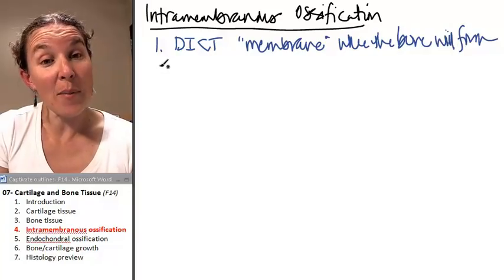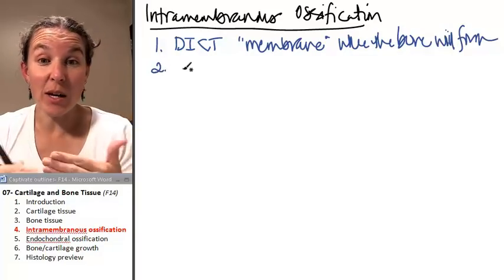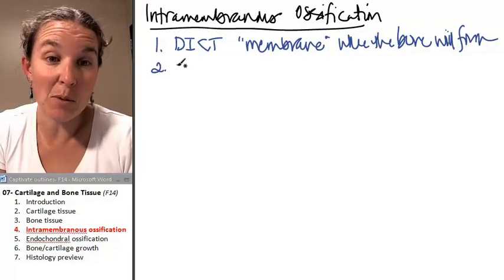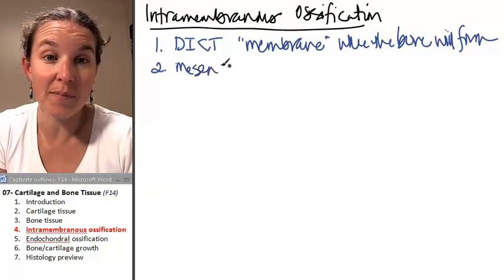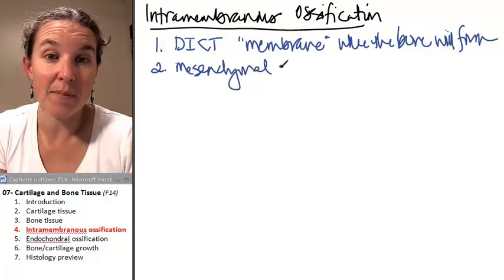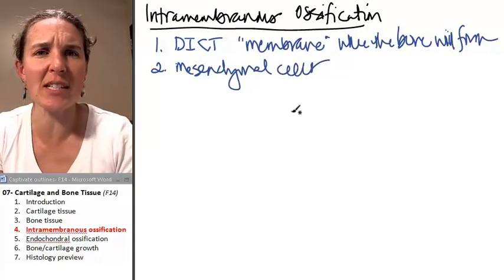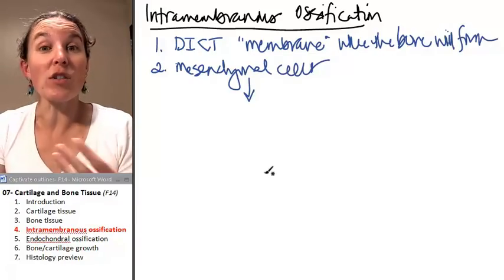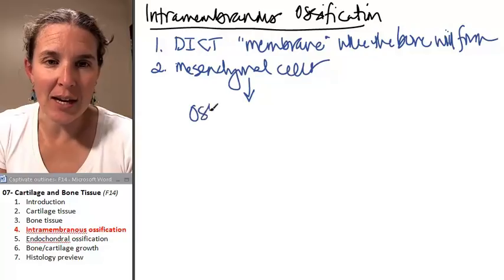So the first thing that happens is that this dense irregular connective tissue membrane has mesenchymal cells in there. Right? Makes perfect sense.